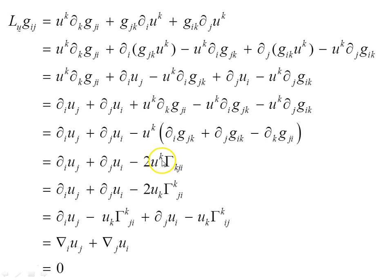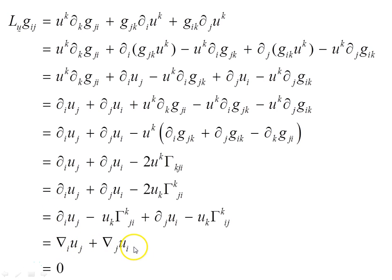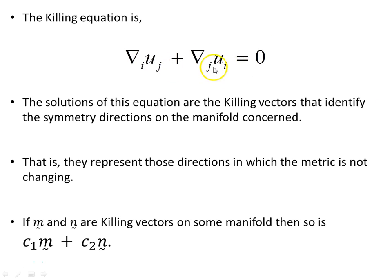Lowering one index and raising k gives the Christoffel symbol of the second kind, and separating them yields the covariant derivative of the vector u with both indices — the covariant derivative with indices swapped. When this is set equal to zero, the Lie derivative of the metric tensor is zero. This is the Killing equation, and the solutions of this equation are the Killing vectors that identify the symmetry directions on the manifold — the directions in which the metric is not changing.